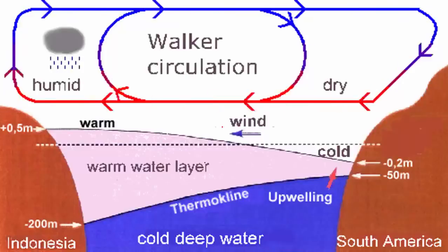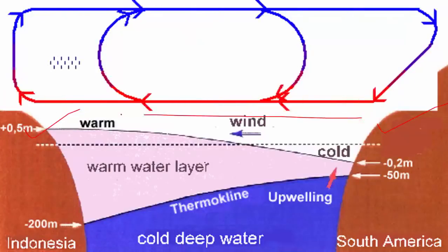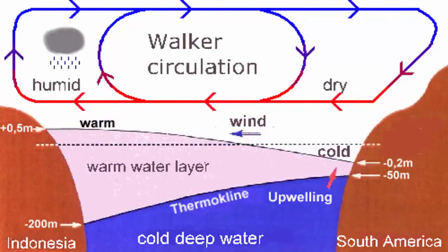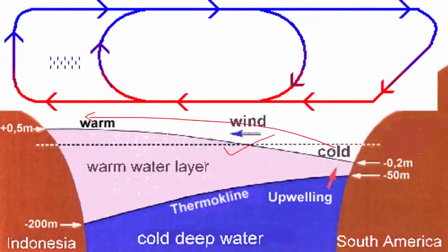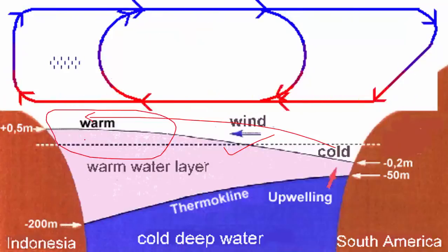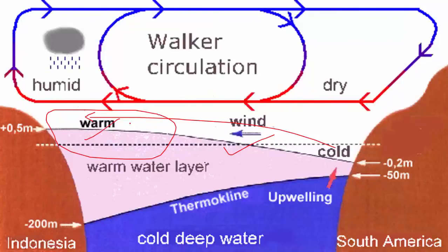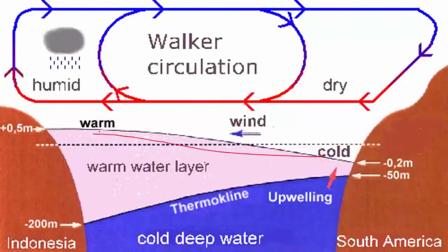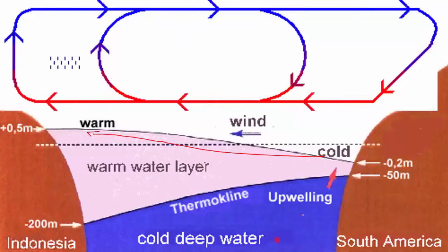In a typical Walker cell over the Pacific Ocean, we have South America on the eastern parts and Australia and Indonesia on the western parts. Winds at the surface blow from east to west. This east-to-west movement of winds is important in dragging warm ocean waters towards the western parts of the ocean due to friction between the wind and the layers of water. This creates a warm water surplus in the western regions where there is piling up of warm water, and ocean levels are a few meters higher there.